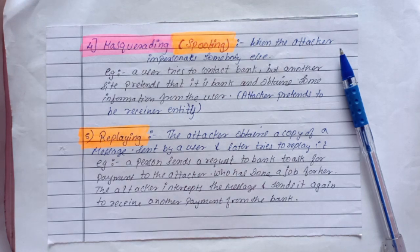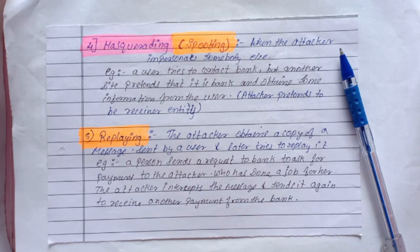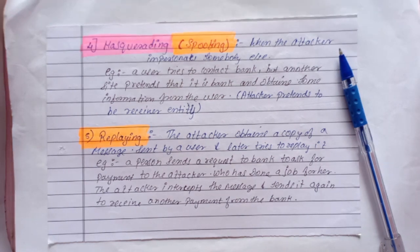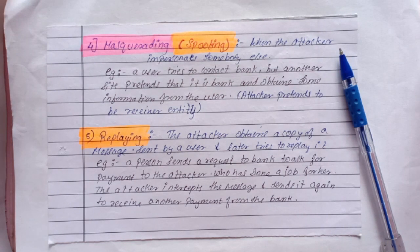The next type is masquerading, also called spoofing. It happens when the attacker impersonates somebody else. For example, a user tries to contact a bank but another site pretends to be the bank and obtains information from the user. The attacker can pretend to be a receiver entity, and sometimes may also pretend to be a sending entity.